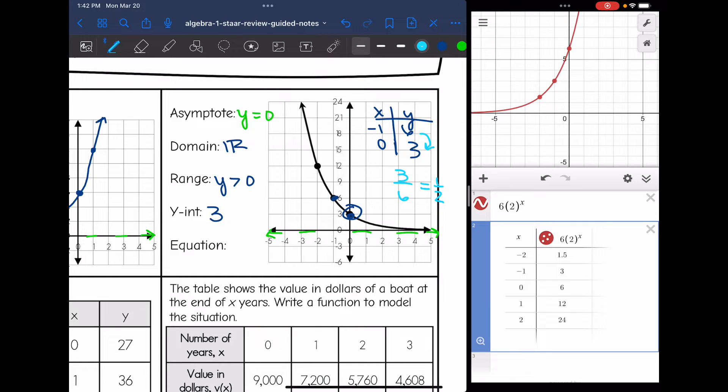So my b value is one half. My y-intercept a value was three. So my equation is y = 3(1/2)^x. And you want to double check this shows decay since it's going down. And my b value is less than one. So I did that correctly.